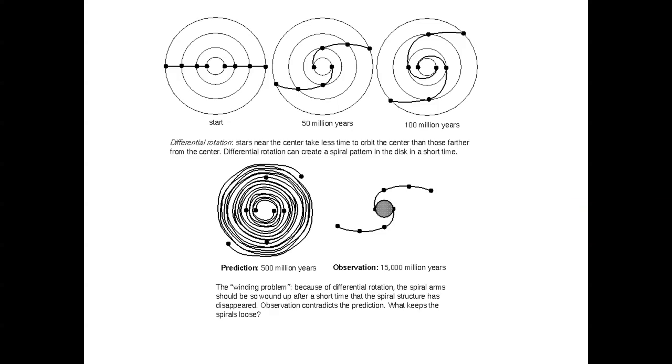So here's just an example. If you had objects that were moving more quickly in angle at the center, and you had started out with straight lines, those straight lines would twist up and up and up, but after 15 billion years, in fact, they're not wound up at all. So what's going on?